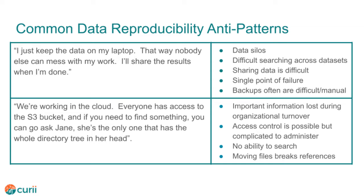On AWS, access control is a simple matter of writing an IAM policy, then attaching it to each user account, user group, or role, then updating the policy or creating a new policy every time you need to add or remove a project or collaborate on a project. Or you could give everyone access to everything and hope nobody changes something they were not supposed to. Finally, I hope you got your data organization right the first time, because you are stuck with it. If you decide to reorganize the data later, file paths change, and any old references in documents and scripts are all going to break.